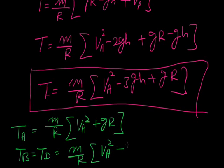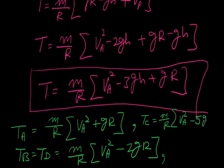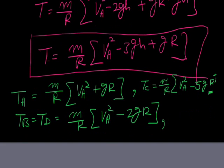Using this general formula: at point A where H = 0, T_A = M/R × (V_A² + GR). At points B and D where H = R, T_B = T_D = M/R × (V_A² − 2GR). At point C where H = 2R, T_C = M/R × (V_A² − 5GR). We can calculate the tension at any point using this formula. Thank you.